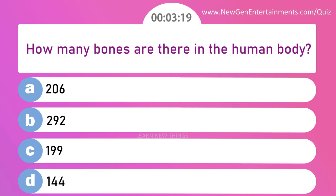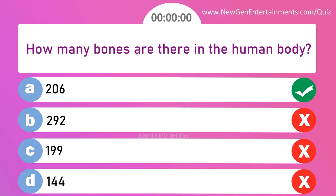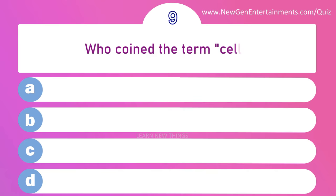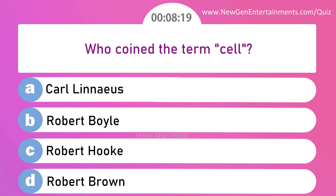Answer is option A: 206 bones in the human body. Who coined the term 'cell'? Options are: A) Carl Linnaeus, B) Robert Boyle, C) Robert Hooke, and D) Robert Brown. Answer is option C: Robert Hooke.